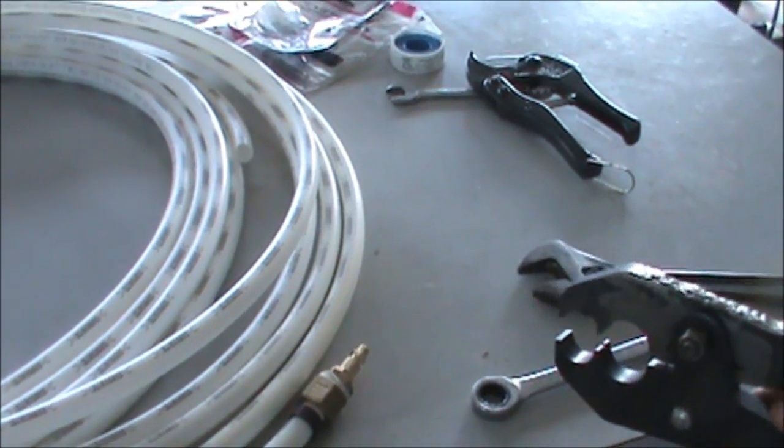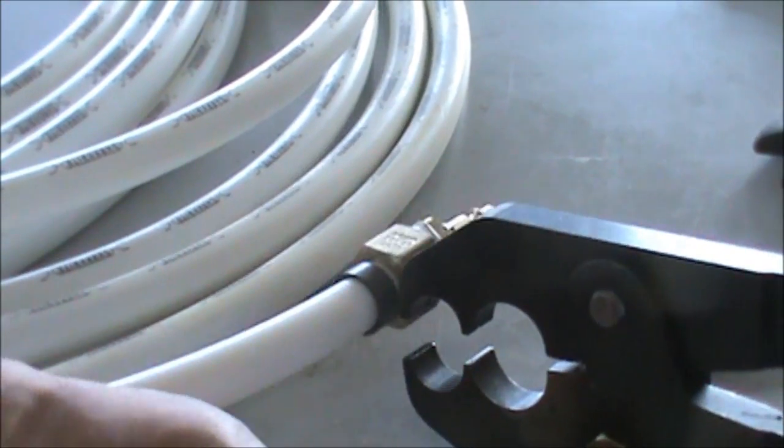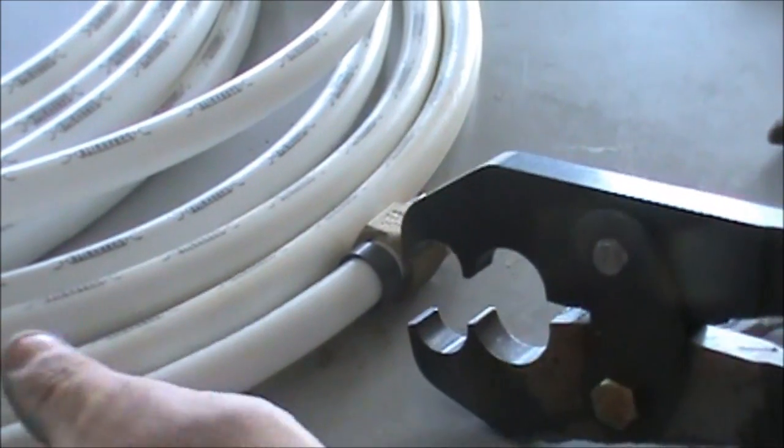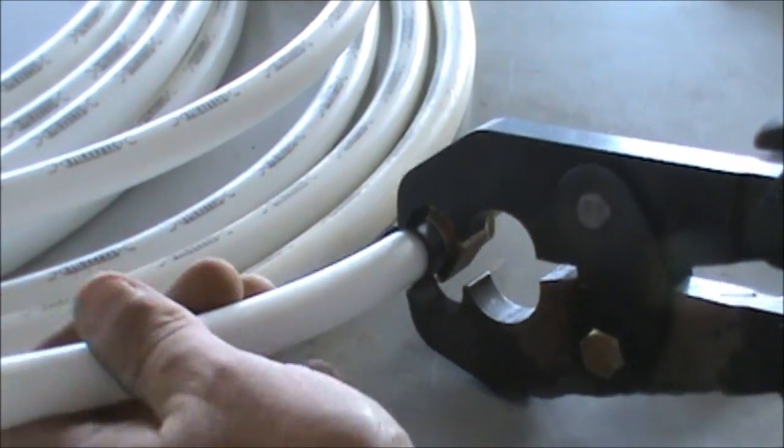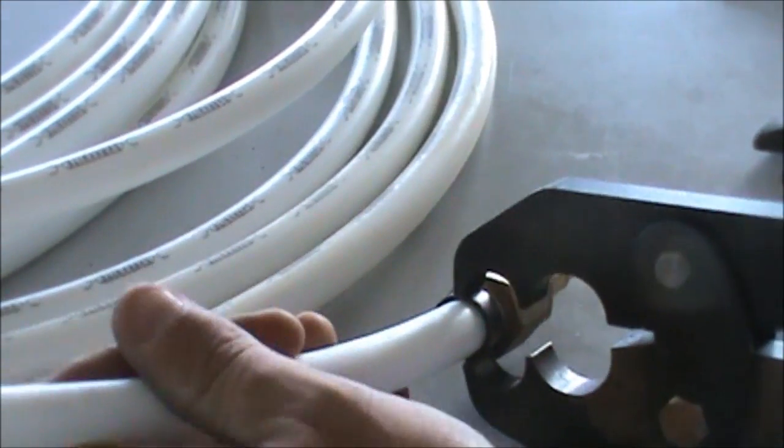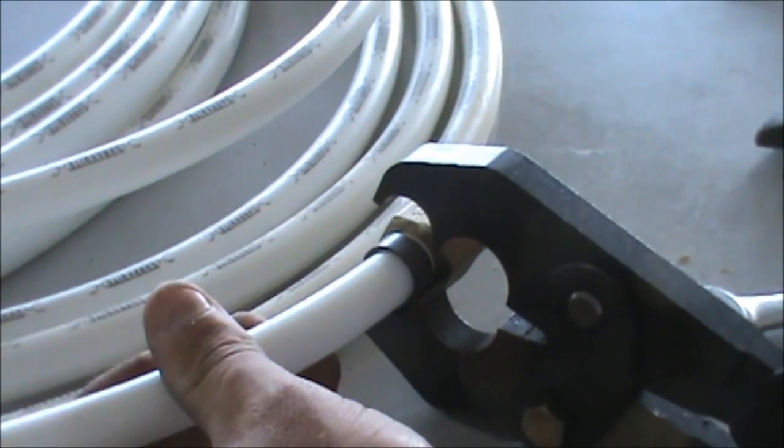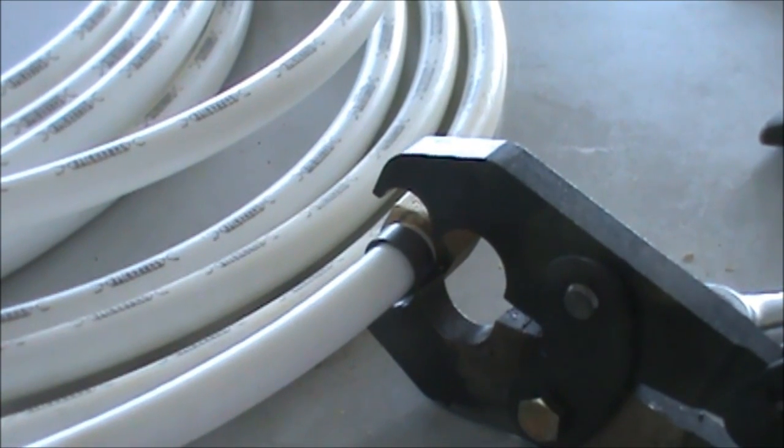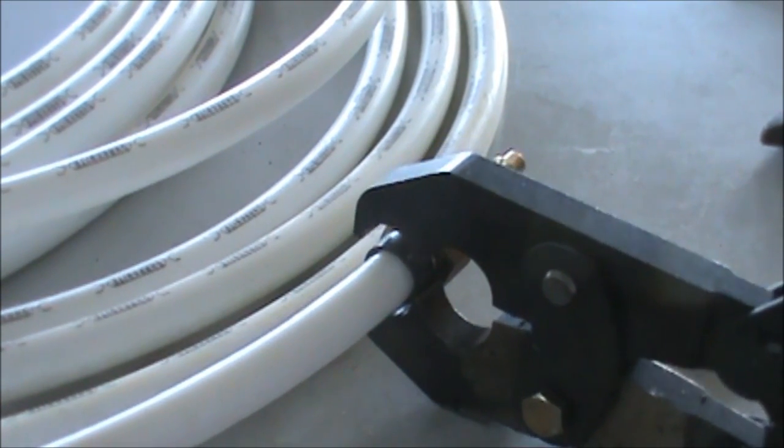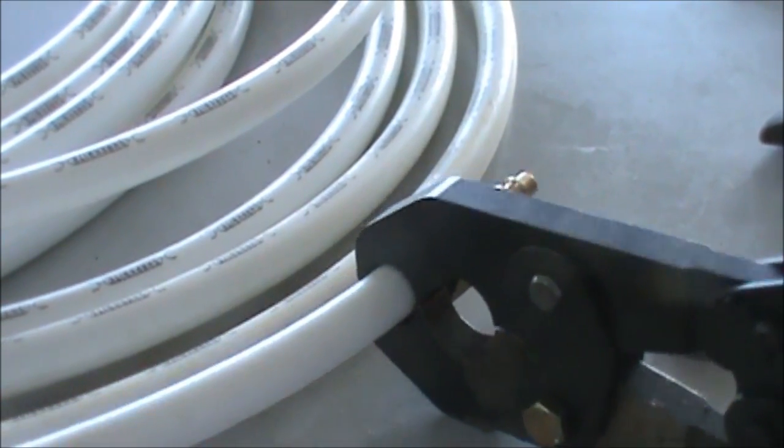So we're just going to take our PEX tool, line it up the way it needs to be, a little tough to do one-handed. Get that ring right where you want it and you're going to take your PEX tool and all it takes is a crimp. Alright, that one's done, so that's one end.